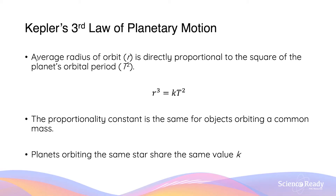Kepler's third law states that the average radius of orbit, denoted by R, is directly proportional to the square of its period. In equation form, this can be expressed as R cubed equals a constant K multiplied by T squared, where T is the period. This constant, known as the proportionality constant K, is the same for any object orbiting the same common mass. So this constant will be the same for all the planets in our solar system because they all orbit the Sun.